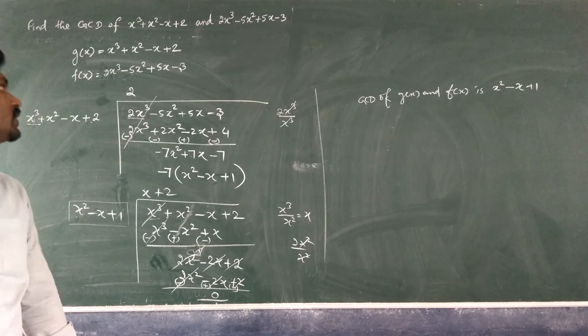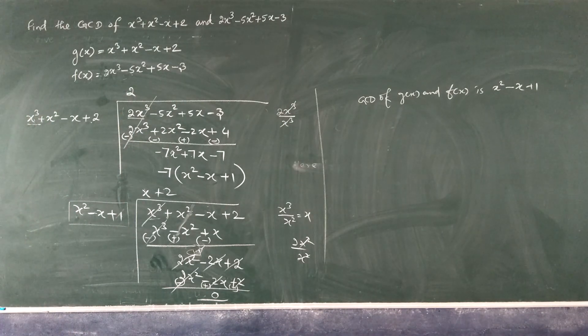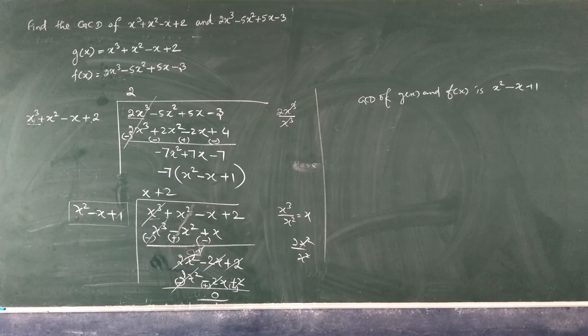When the remainder becomes 0, the divisor at that point is the GCD. This is a very simple method you can understand easily. Thank you.